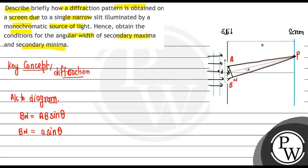Now if we consider the position of minima for the nth term, BN should be n lambda. So if BN equals n lambda equals a sin theta, then sin theta equals n lambda upon a.